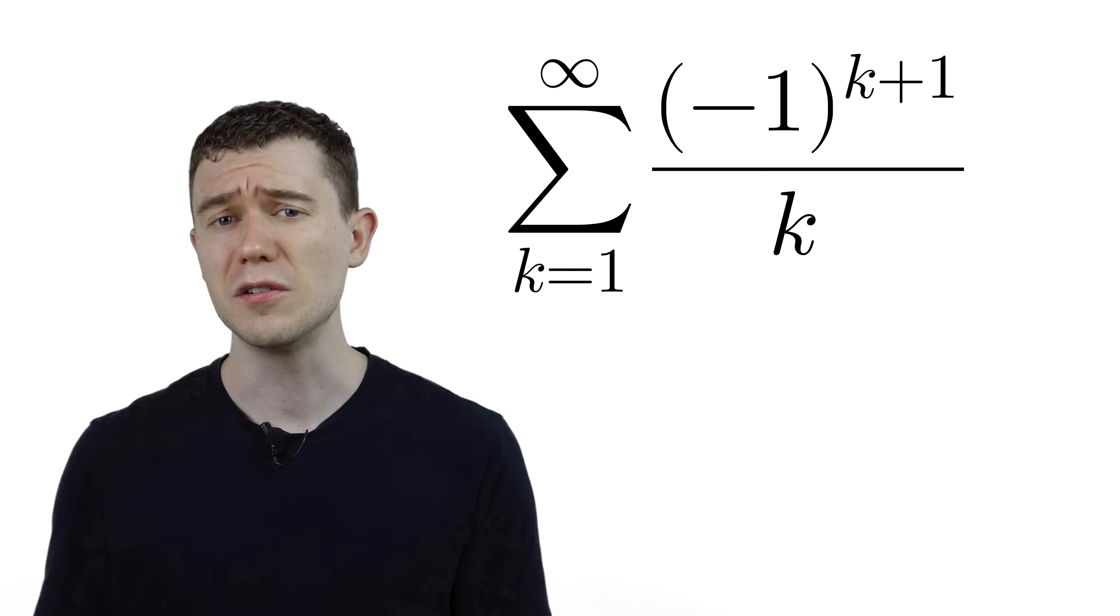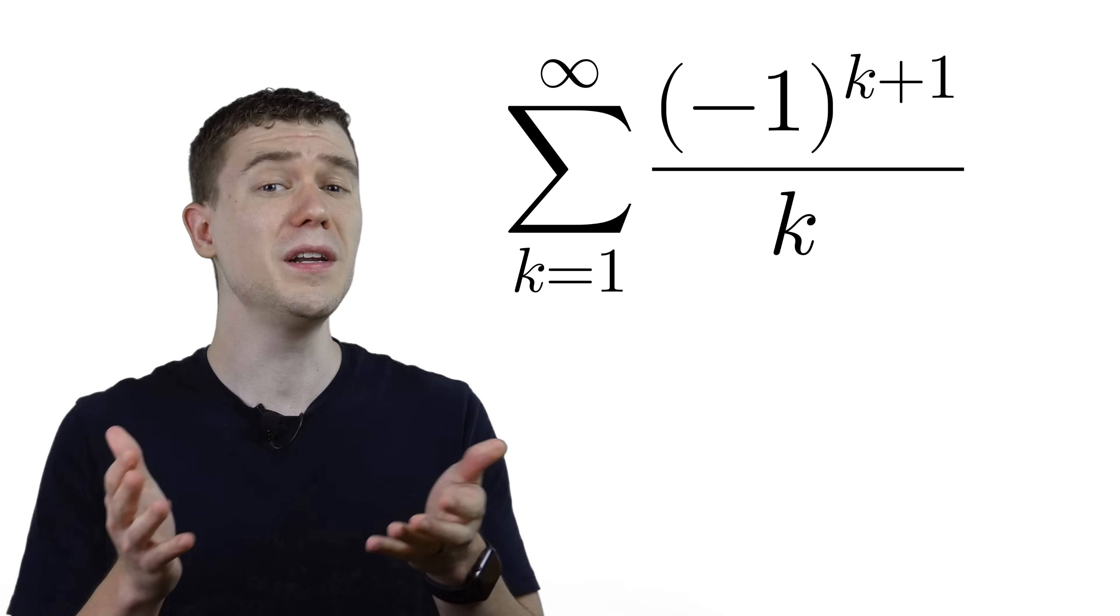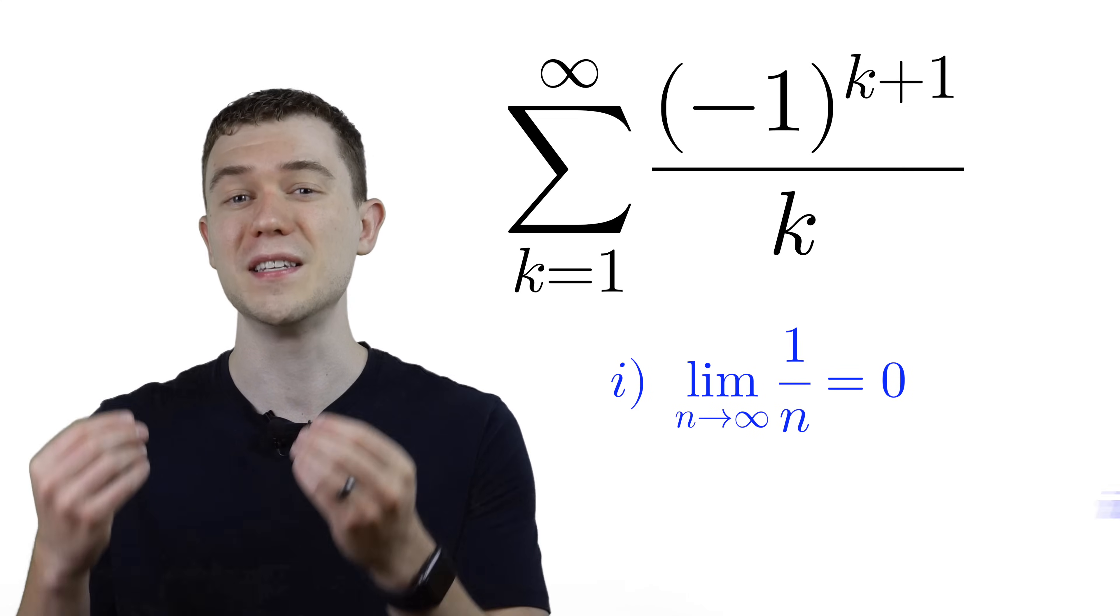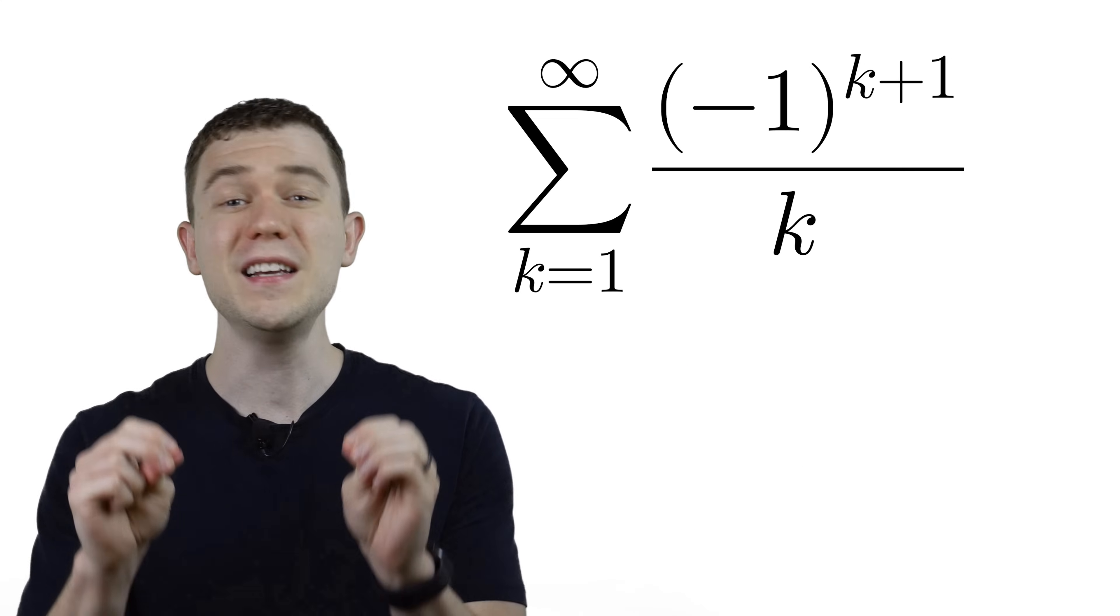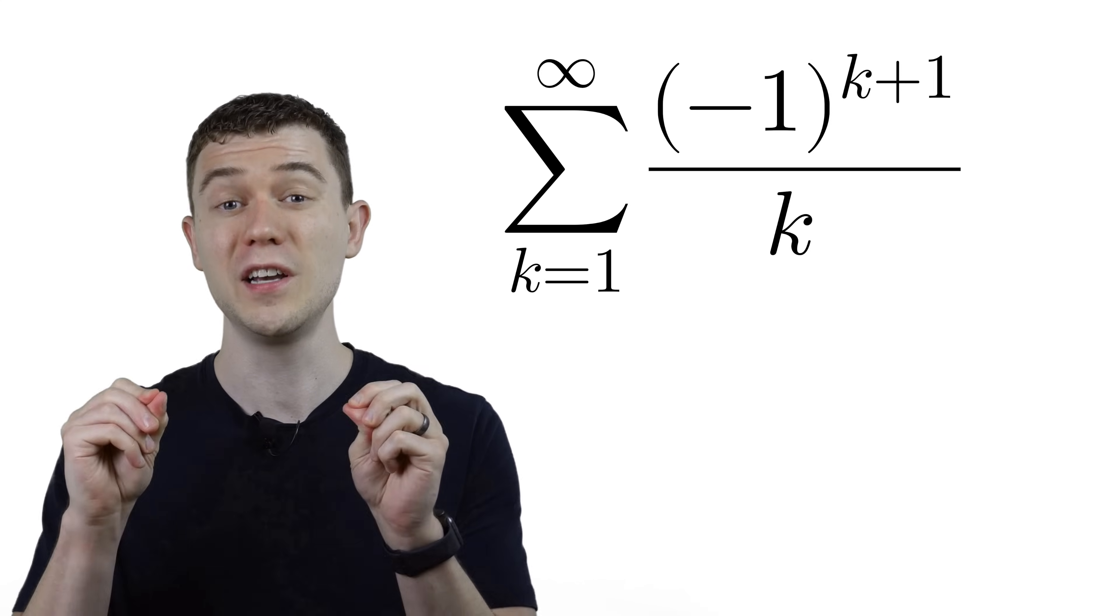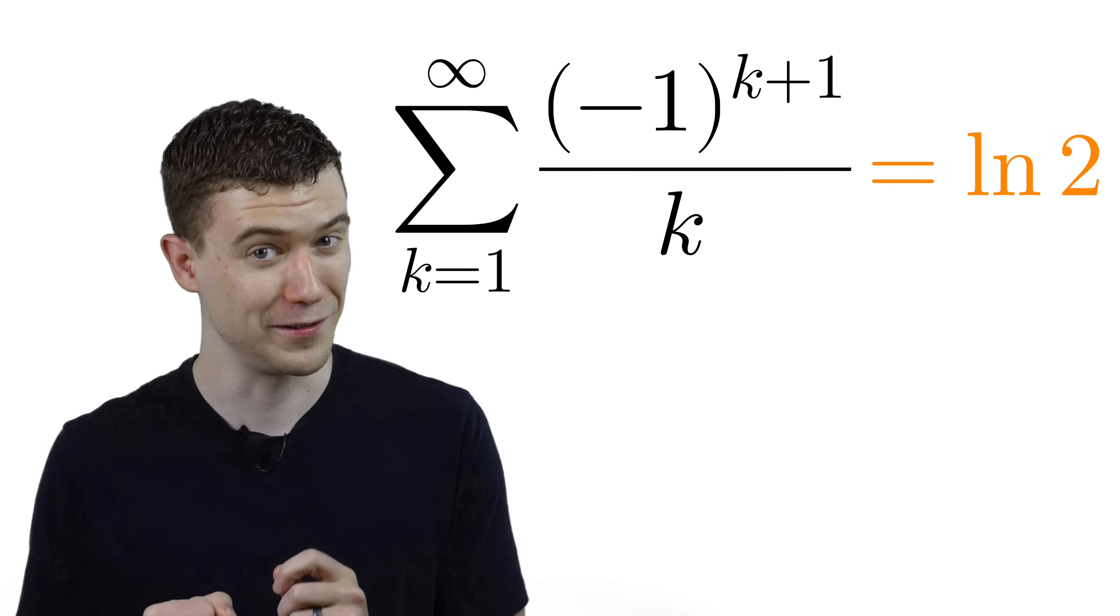If you use the alternating series test, you see that this limit goes to zero and the terms of the sequence are decreasing, thus this series should converge. But what I think is more interesting is what it actually converges to. Ln of 2, that is.